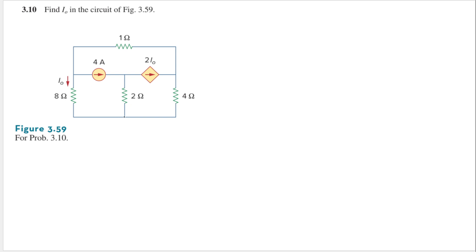From the circuit, let's set the bottom node as our ground, so the voltage there is assumed to be 0. We label this node as V1, this node as V2, and this node as V3. Now let's assume the direction of the currents: this one going down, this going down, this going down, this going to the right. For the current source, I just follow the direction of the arrow, so those go to the right.